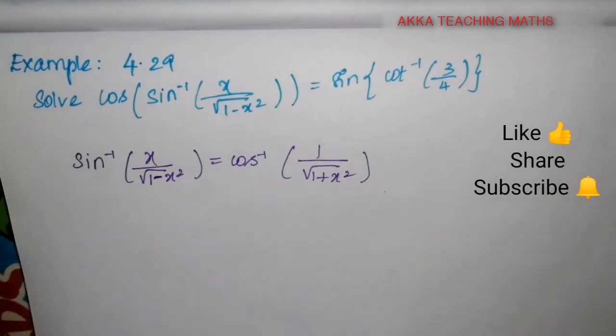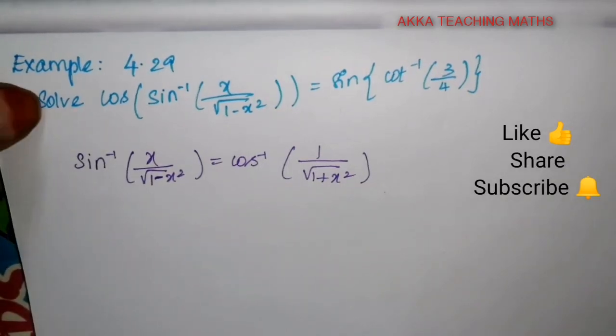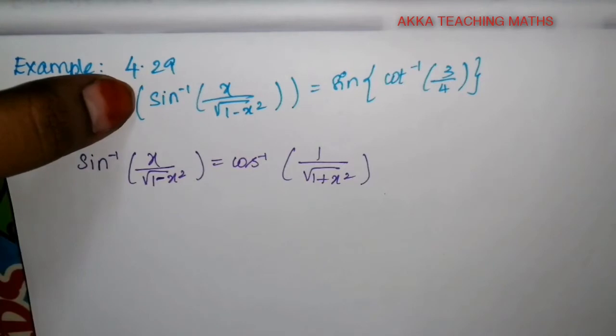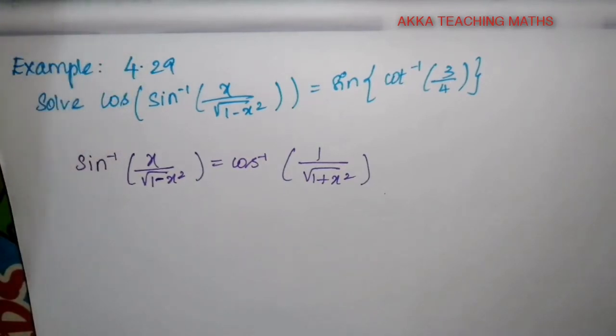Hi friends, welcome to Aka Teaching Max. Example 4.29: Solve cos of sin inverse of x divided by root of 1 minus x square equal to sin of cot inverse of 3 by 4.